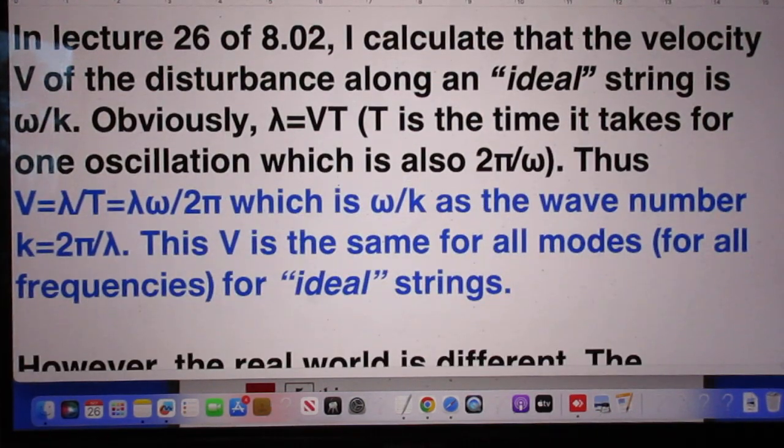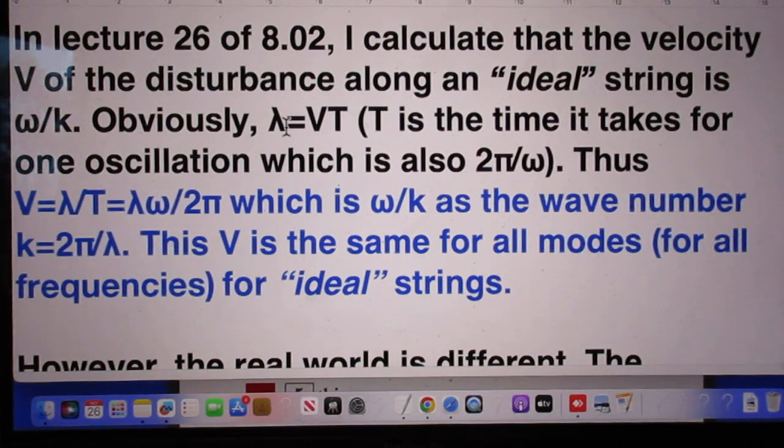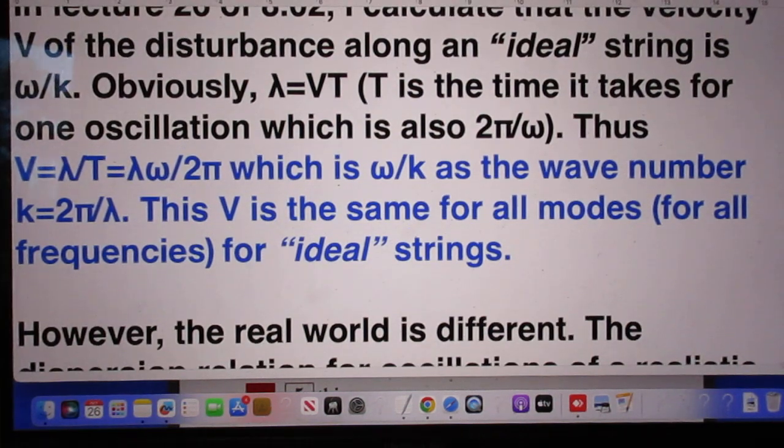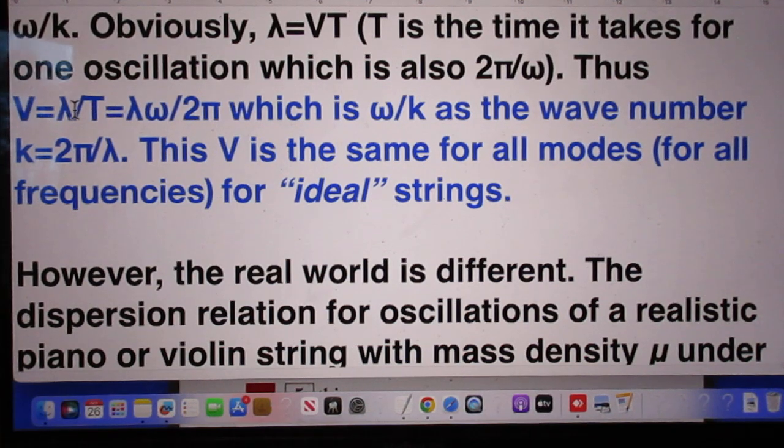In lecture 26 of 802, I calculate that the velocity V of the disturbance in the direction of the string, of an ideal string, is omega divided by k. That is obvious. If you start to shake a string for a time capital T, which is the time that it takes for one complete oscillation, obviously the disturbance moves over a distance lambda. Therefore lambda is VT. T is also 2π divided by omega.